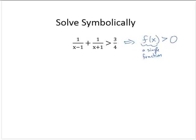So let's do a little work here. Let's subtract the 3 fourths. So I'd have 1 over x minus 1 plus 1 over x plus 1 minus 3 fourths is greater than 0.